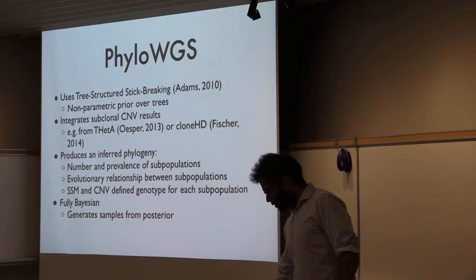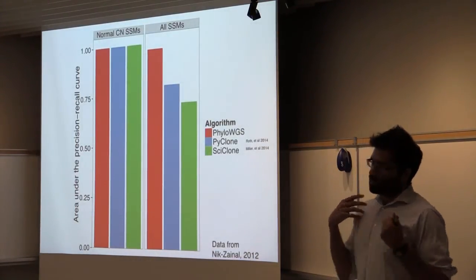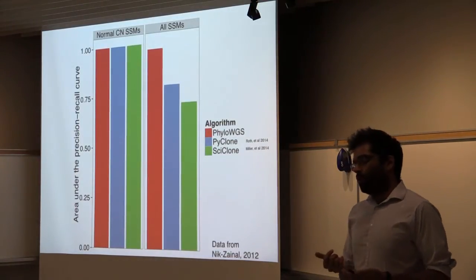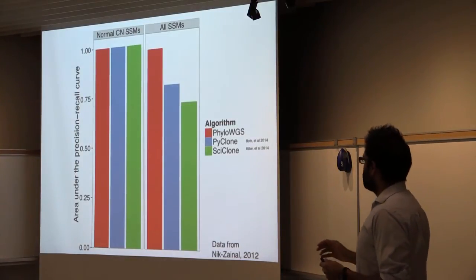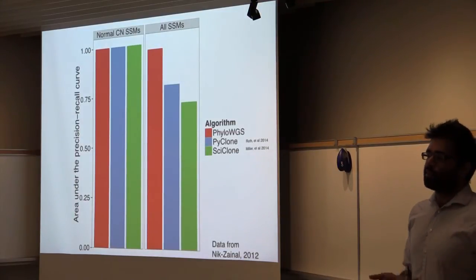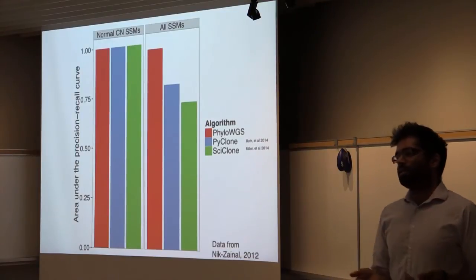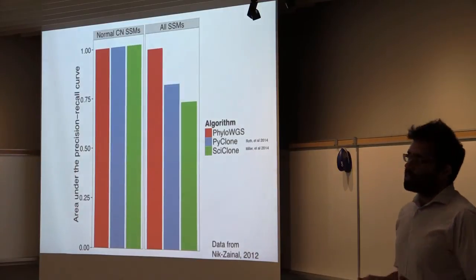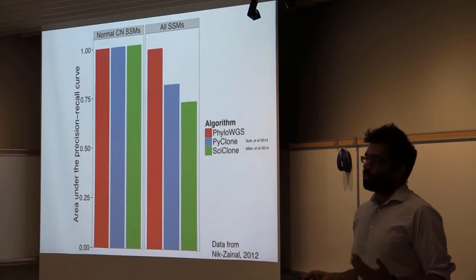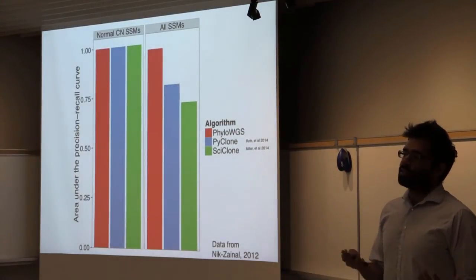This slide compares three algorithms: Phylo-WGS, which does phylogenetic correction for CNVs; Pyclone, which does some correction for CNVs but not in a phylogenetic way; and Cyclone, which does no correction for copy number alterations. The data is from a breast tumor sequenced at 288x coverage whole genome. On the left, performance measured by clustering accuracy for SSMs located only in regions with normal copy number — all three algorithms do basically the same. On the right, looking at all SSMs including those in regions of clonal and subclonal copy number change, Phylo-WGS performs the same as before while the other two do worse, showing the utility of full phylogenetic correction for copy number alterations.